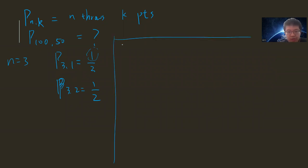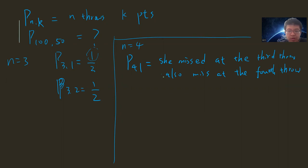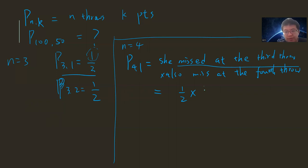Okay, so let's solve n equals four. Now the problem becomes tricky. Let's solve p(4, 1). p(4, 1) means she missed at the third row and also missed at the fourth row. She missed at the third row — the probability is one half. Now she has already missed two, so the probability of missing at the fourth row is two divided by three. So the answer will be one divided by three.